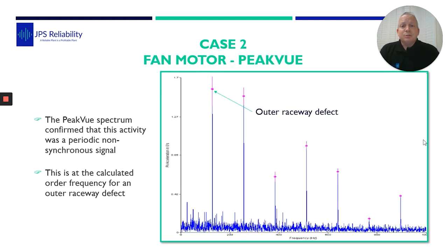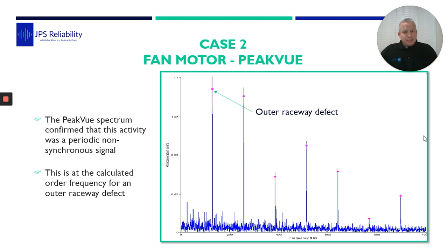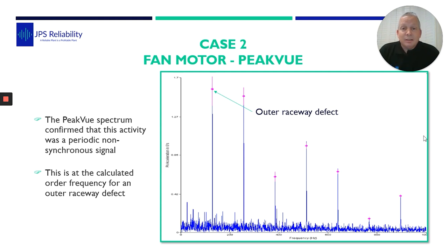That particular unit was peak view. On here you can see the one order defect and exponentially decayed harmonic. So we know that bearing is going bang, bang, bang and the energy is ringing. That was actually at the outer race defect frequency. So straight away, we said to them: yes, you're right, the bearing sounds bad — it is rooted, and it's actually got a bearing race defect highest on the outer race.